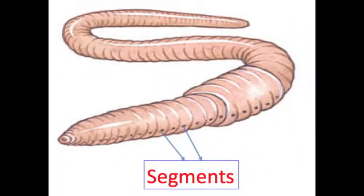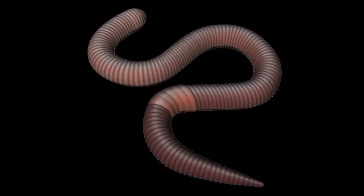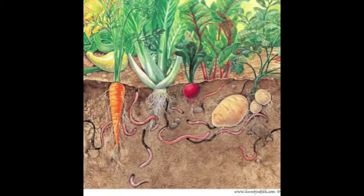The earthworm has a segmented body. Segments each contain different elements of body systems, such as circulatory, nervous, and excretory tracts. Segmentation increases the body movement and efficiency, which helps when they are burrowing underground.